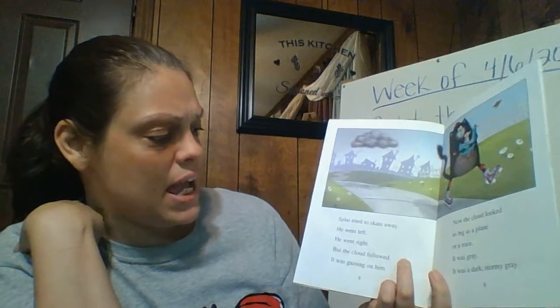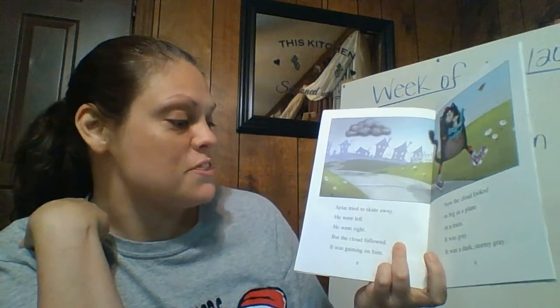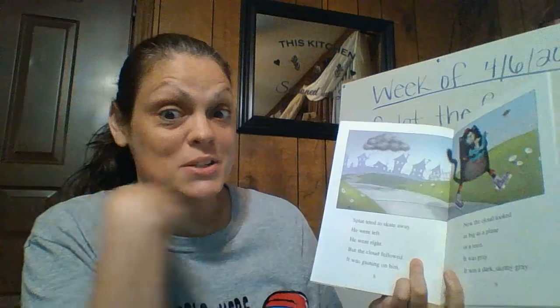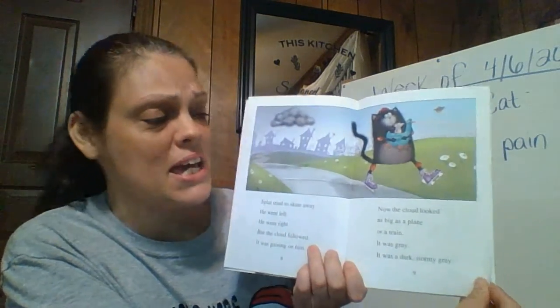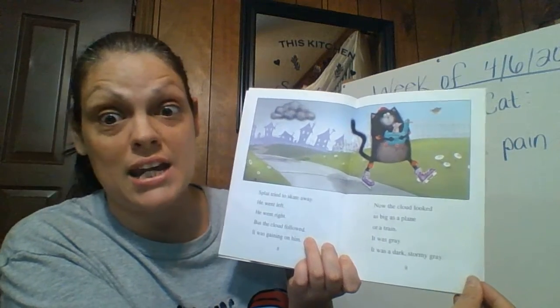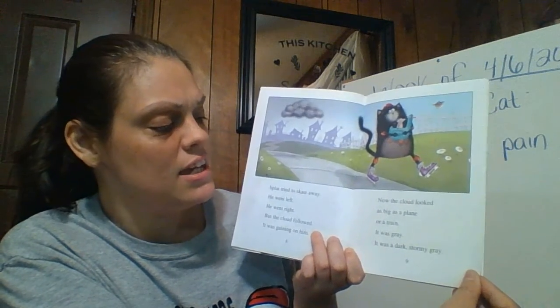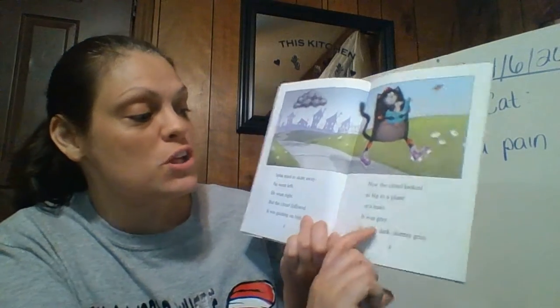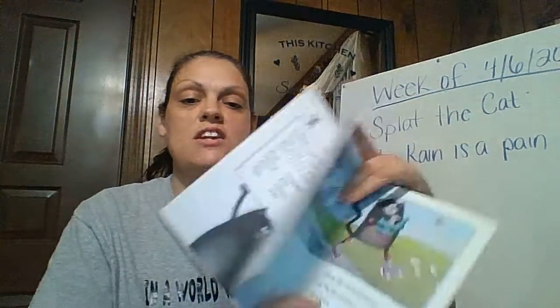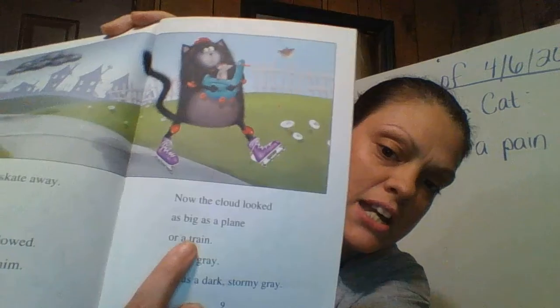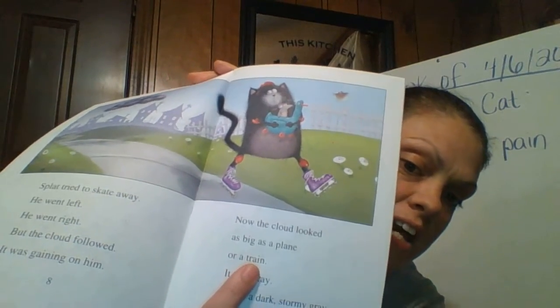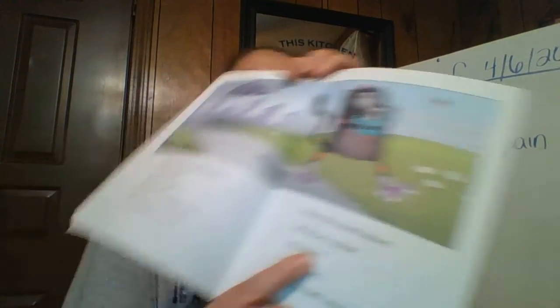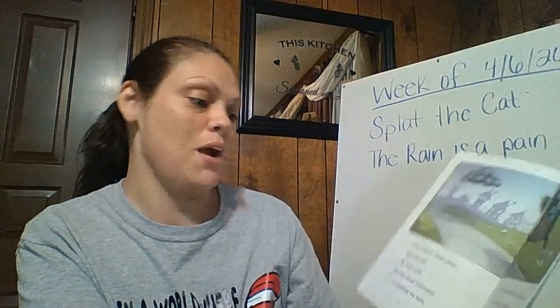Splat tried to skate away. He went left. He went right. But the cloud followed — it was gaining on him. Now the cloud looked as big as a plane or a train. It was gray. It was dark. Stormy gray. If we look here on this page, we can see another word with our vowel team — 'train.' AI. Sometimes the first letter says its name.